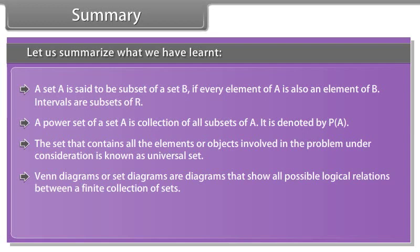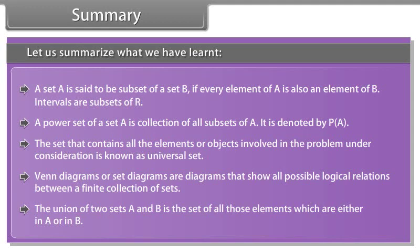The set that contains all the elements or objects involved in the problem under consideration is known as universal set. Venn diagrams or set diagrams are diagrams that show all possible logical relations between a finite collection of sets. The union of two sets A and B is the set of all those elements which are either in A or in B.